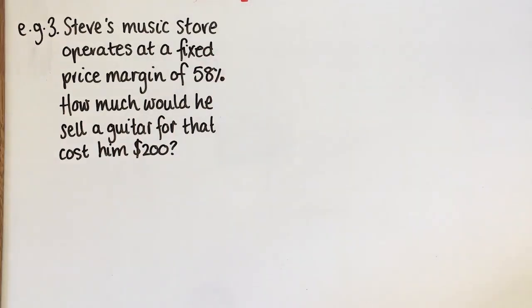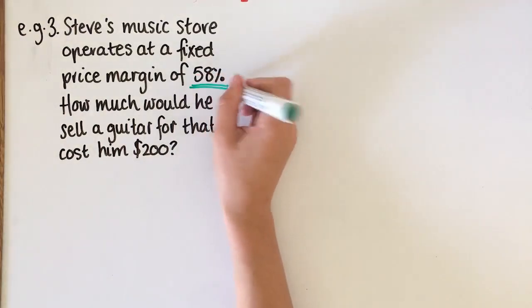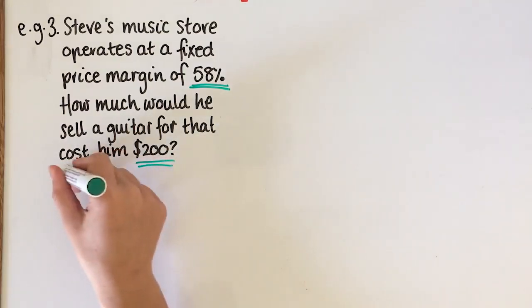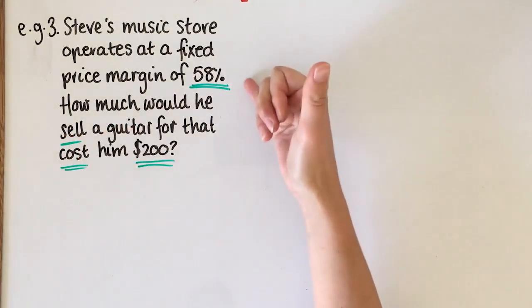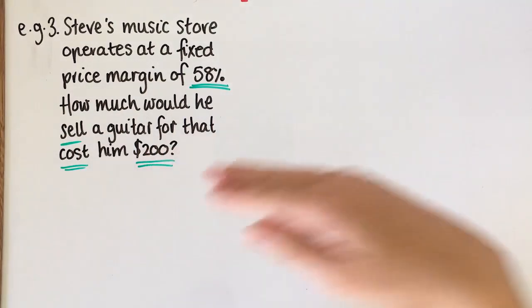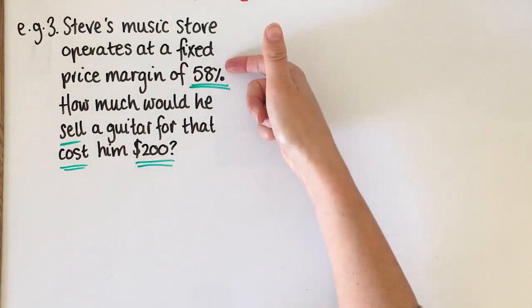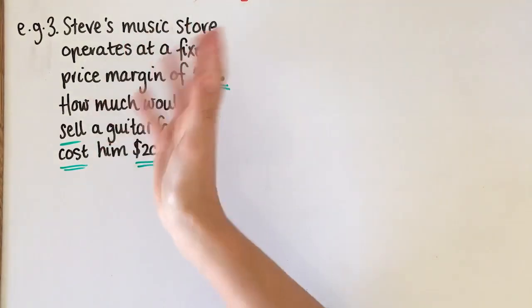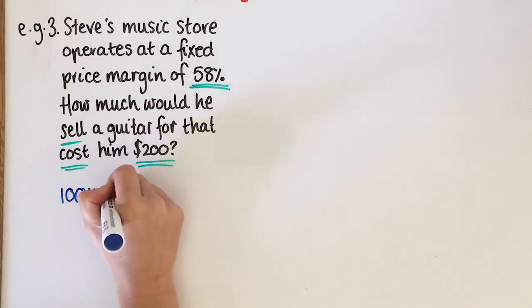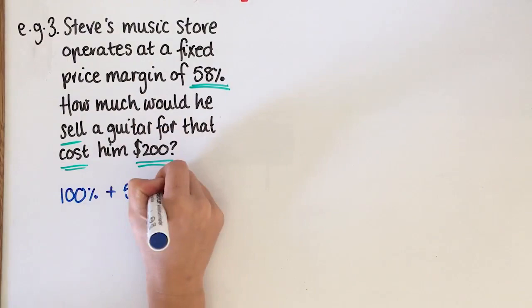So for this question, we've got Steve. Steve's music store operates at a fixed margin of 58%. How much would he sell a guitar for that cost him $200? So pretty much what they're saying is, whatever Steve buys for his guitar store, he then sells it for 58% more. So everything is bumped up 58% so that Steve can actually make a profit in his business. So what we need to do, I've highlighted my key information. He has 100%, then he adds another 58% to it.